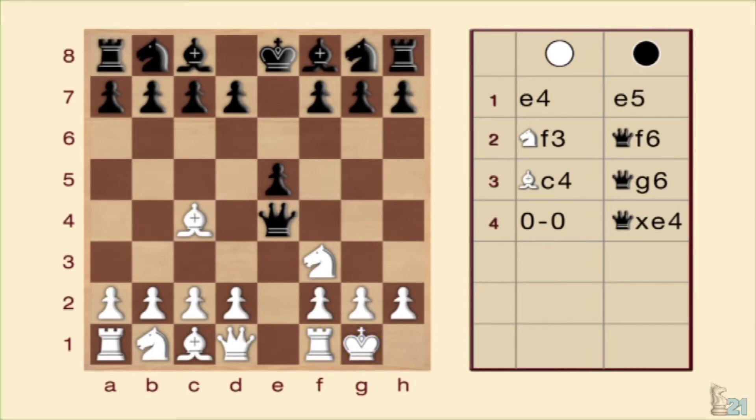En cambio, su rival tiene tan solo un peón y la dama colocada en mal lugar. Aprovechándose de la situación, las blancas efectúan el sorprendente movimiento alfil por F7 jaque.